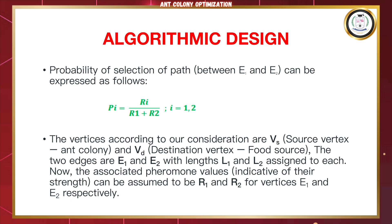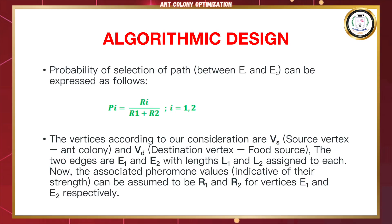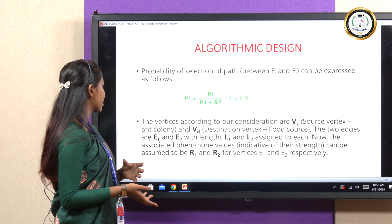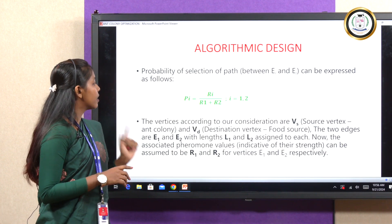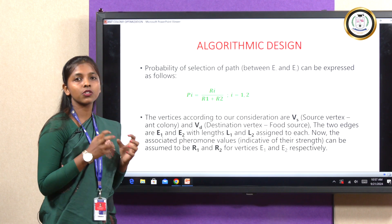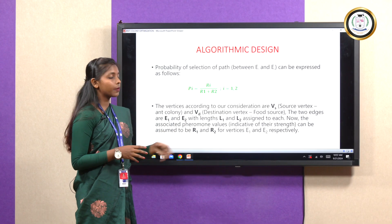This is the algorithm design. The formula for the probability of selecting the shortest path is: Pi = Ri / (R1 + R2), where i can be 1, 2, or any other integer. The vertices considered are Vs, which is the source vertex and colony, and Vd, which is the destination vertex, that is the food source. The two edges are denoted as e1 and e2 with lengths l1 and l2. The associated pheromone values indicating the strength of pheromone are assumed to be r1 and r2 for edges e1 and e2 respectively.